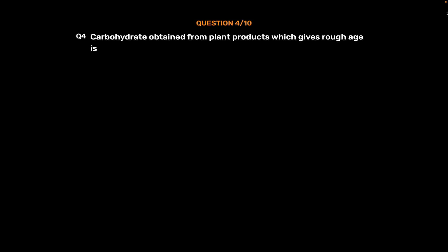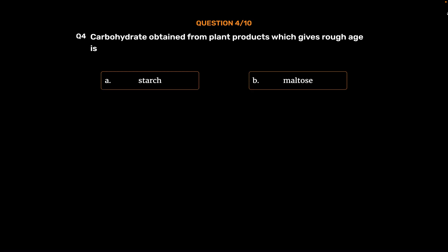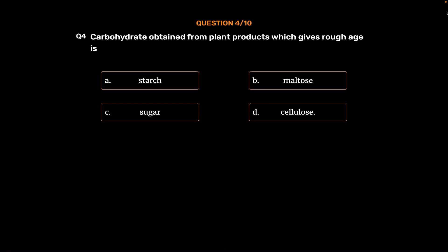Question number 4. Carbohydrate obtained from plant products which gives roughage. Option A: Starch. Option B: Maltose. Option C: Sugar. Option D: Cellulose. The correct answer is Option D: Cellulose.